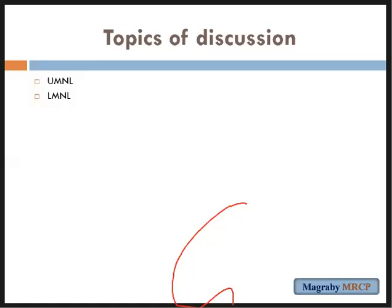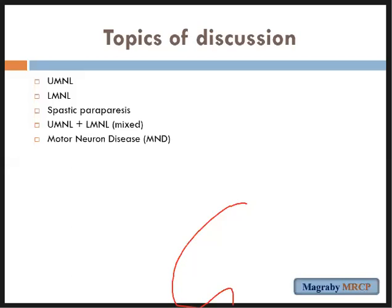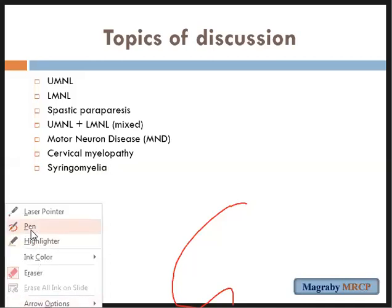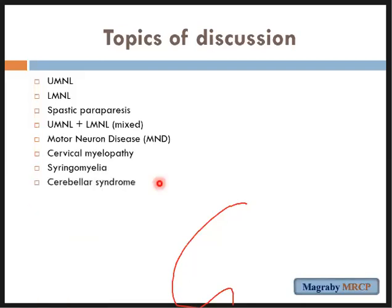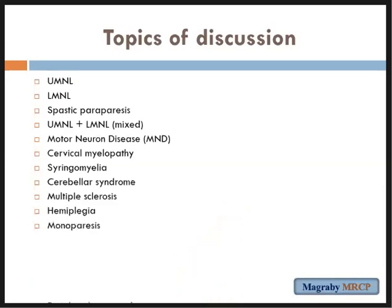We will discuss today the upper motor neuron lesion, lower motor neuron lesion, spastic paralysis, and upper motor neuron plus lower motor neuron lesion in the same patient — the mixed lesions — and motor neuron disease. The most characteristic three are motor neuron disease, cervical myelopathy, and syringomyelia, which are characterized by mixed upper and lower motor neuron lesions. Then we will speak about cerebellar syndrome, multiple sclerosis, hemiplegia, monoparesis, peripheral neuropathy, proximal myopathy, myasthenia gravis, and bulbar palsy.